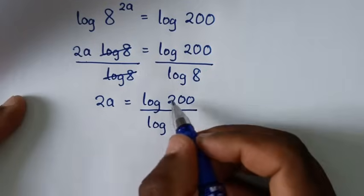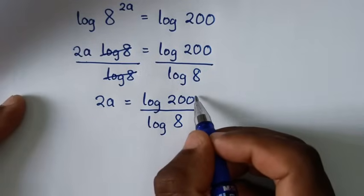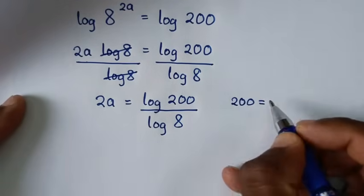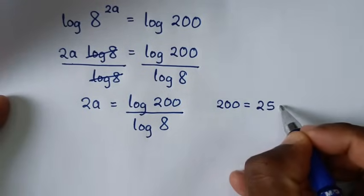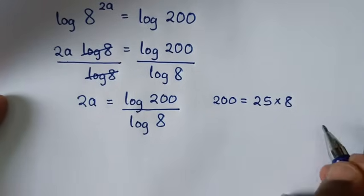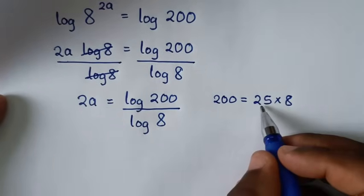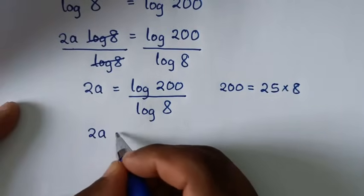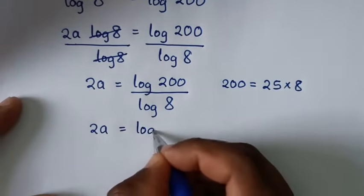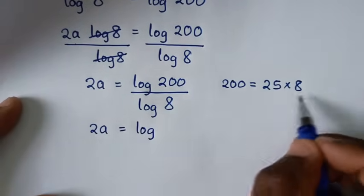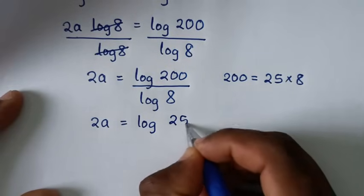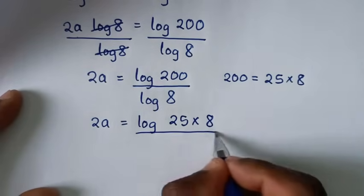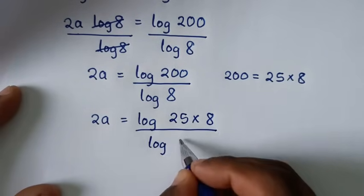Then from here, for this 200 we'll find a common factor with 8. So 200 is equal to 25 times 8, because 25 times 4 is 100. Then it will be 2a is equal to log of 25 times 8 over log of 8.